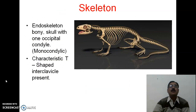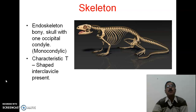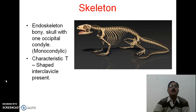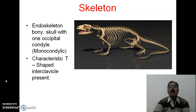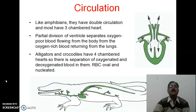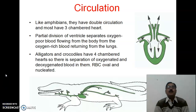Regarding the skeleton, the endoskeleton is fully bony. The skull has one occipital condyle, meaning it is monocondylic. There is a characteristic T-shaped interclavicle present.